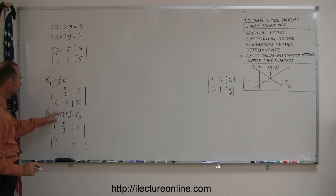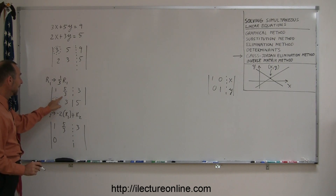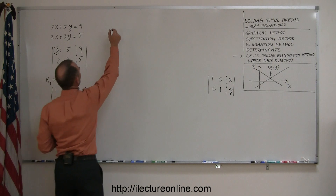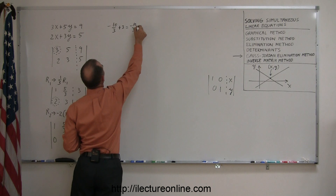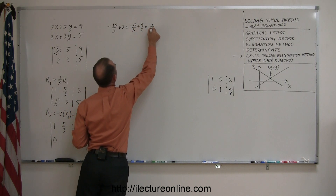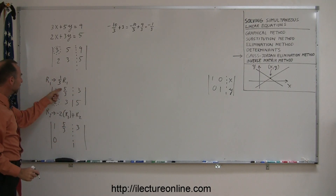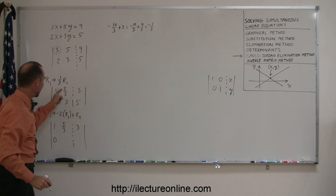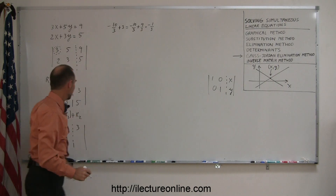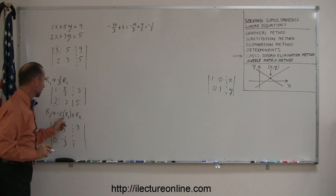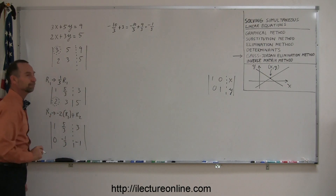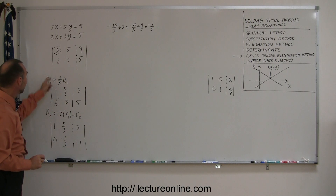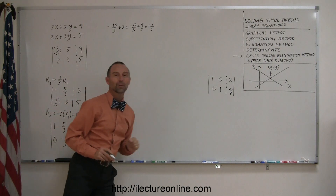Negative 2 times r1 means negative 2 times this. Negative 2 times 5 over 3 gives me negative 10 over 3, and I add that to 3. So negative 10 over 3 added to 3 is the same as negative 10 over 3 adding to 9 over 3, which is minus 1 over 3. Over here I'm multiplying the 3 by negative 2, that gives me negative 6, add it to 5, that gives me negative 1. Halfway there — the 3 and the 2 now change to 1 and 0, which is exactly what I want.